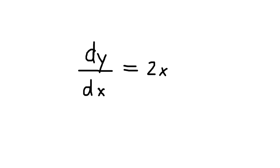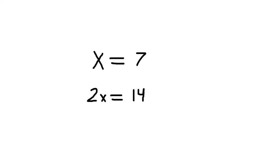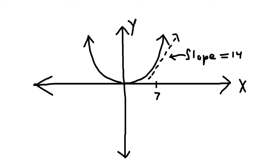So now, what do we do with 2x? Well, we can now plug in any value for x and we can find out the slope of the graph y equals x squared. So if x equals 7, then 2x equals 14. So the slope of the graph at x equals 7 is 14.